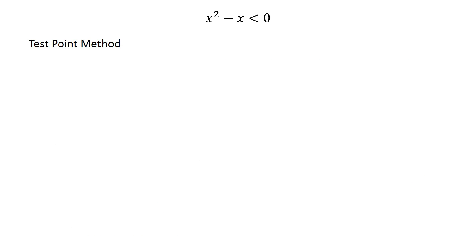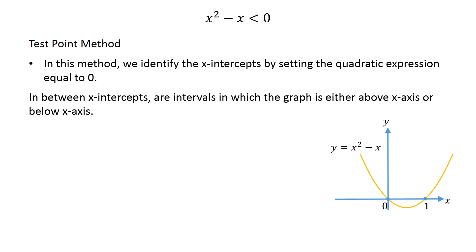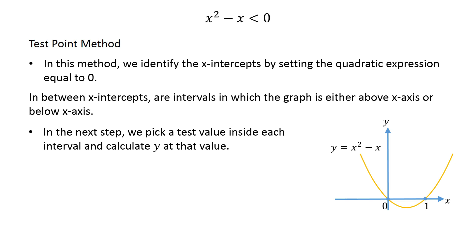Let's solve this problem using the test point method. In this method, we identify the x-intercepts by setting the quadratic expression equal to 0. In between x-intercepts are intervals in which the graph is either above the x-axis or below the x-axis. In the next step, we pick a test value inside each interval and calculate y at that value.